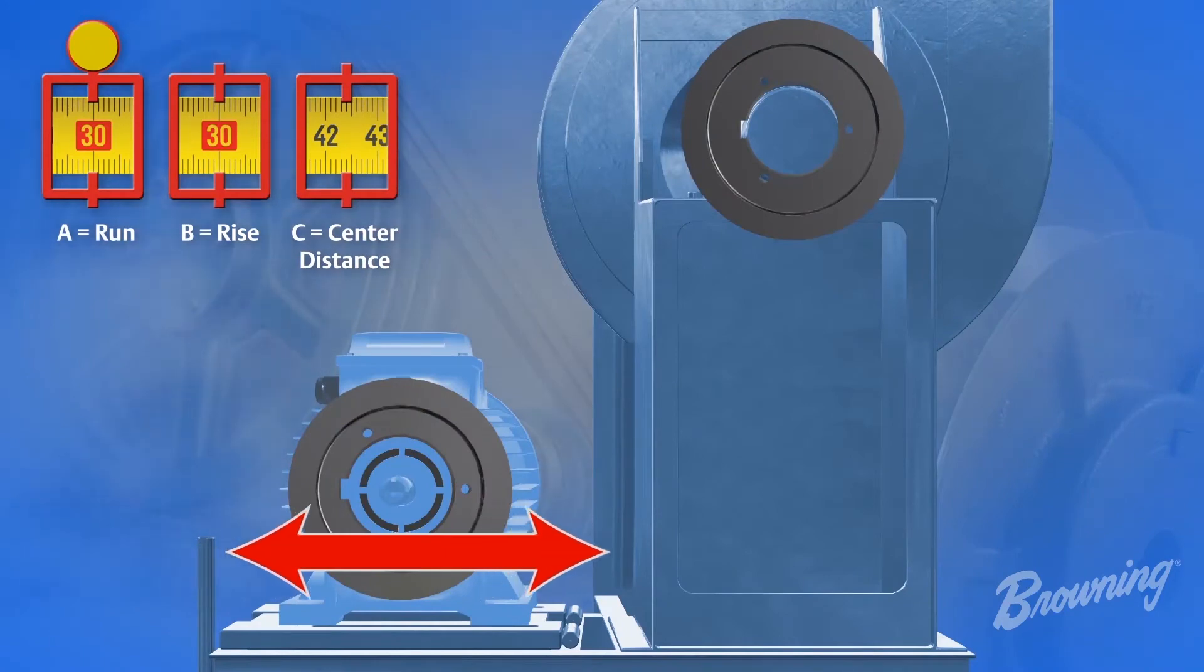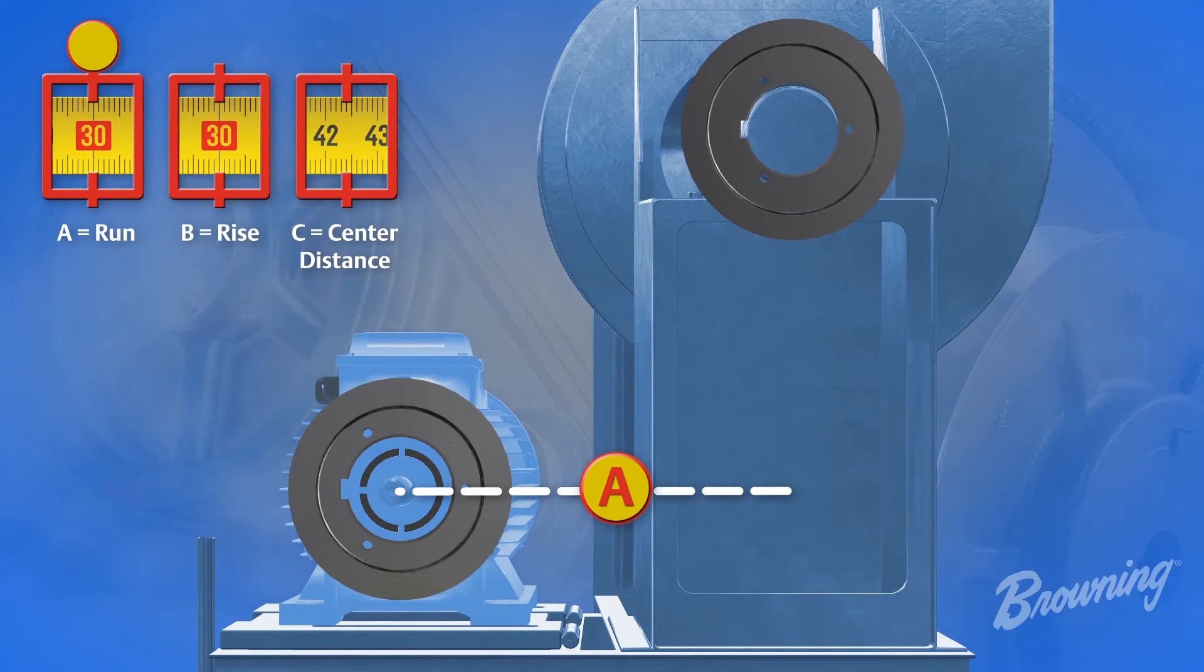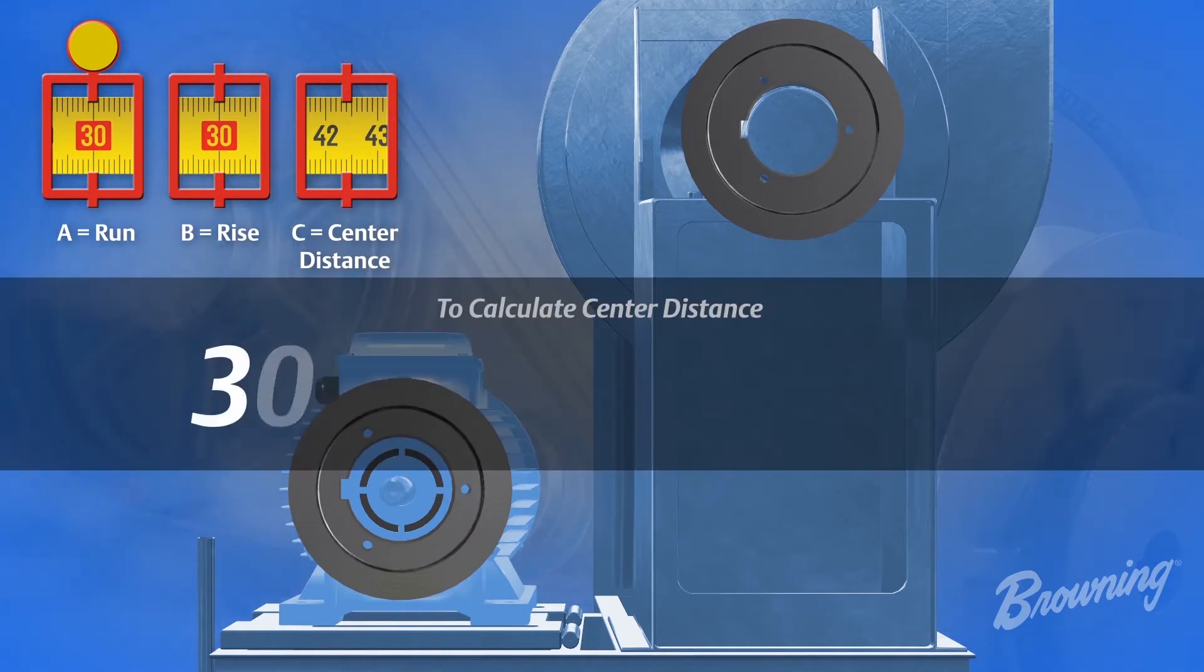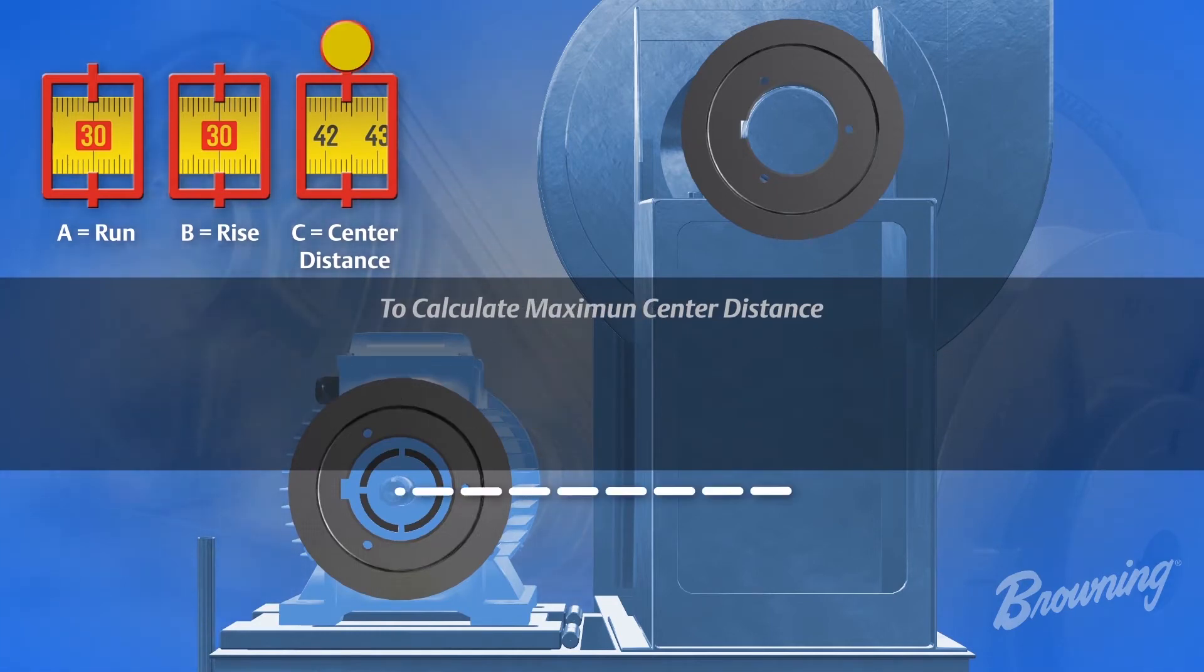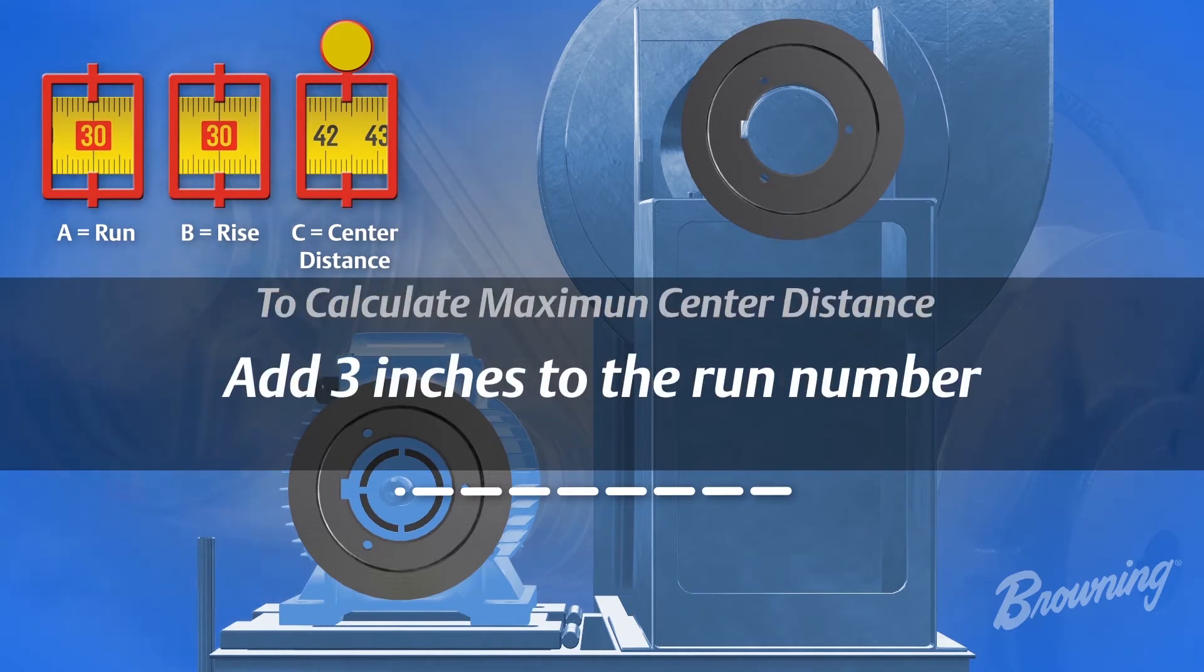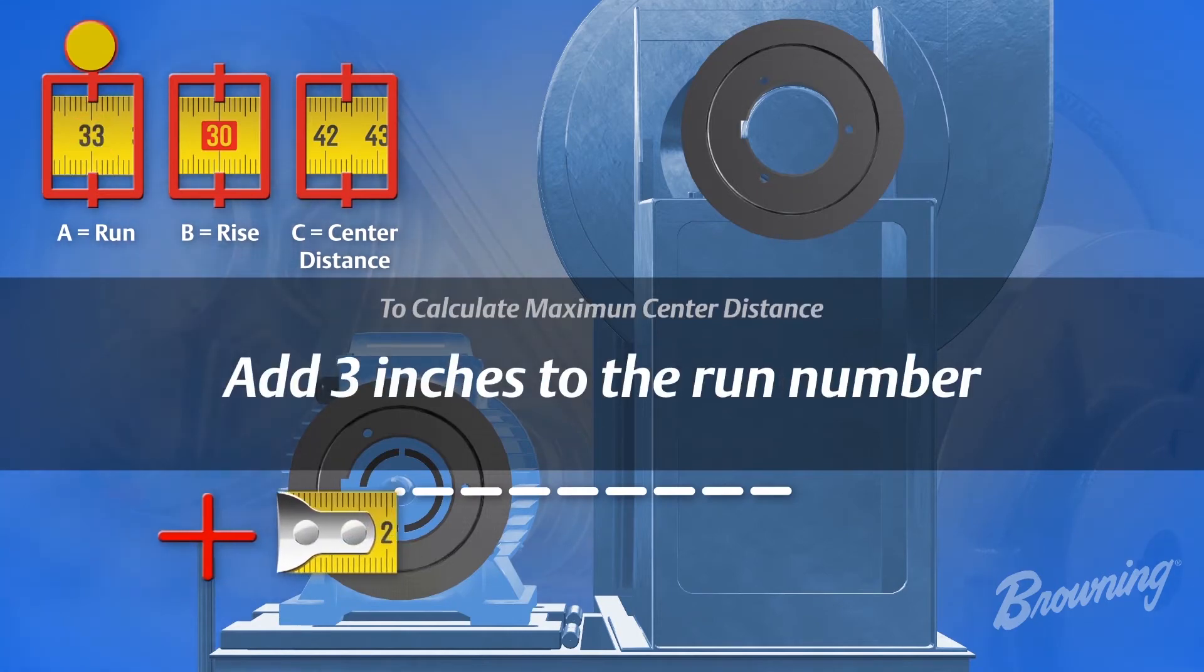After measuring the amount of motor adjustment, we can recalculate center distance by changing a, or the run, to reflect the motor adjustment. If 30 squared plus 30 squared equals 42.42, then to calculate maximum center distance, we would add 3 inches to the run number and make it 33. 33 squared plus 30 squared equals 44.59.